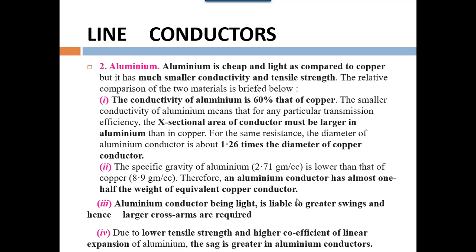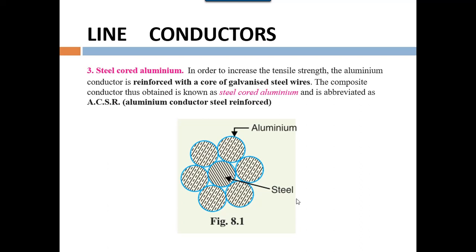If we increase the cross-sectional area of aluminium, its conduction will increase. Comparing aluminium and copper for the same current-carrying capability, the aluminium diameter is 1.26 times greater than the copper diameter. The specific gravity of aluminium is lower than copper, therefore an aluminium conductor has almost one-half the weight of the equivalent copper conductor. However, aluminium conductor being light is liable to greater swing and hence larger cross arms are required. Due to low tensile strength and high coefficient of expansion of aluminium, the sag is greater in aluminium conductors.